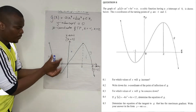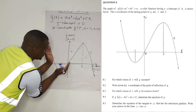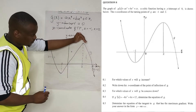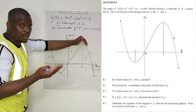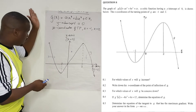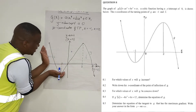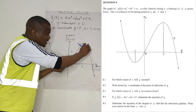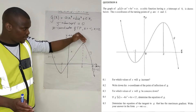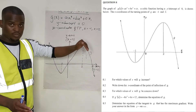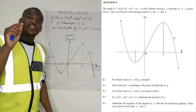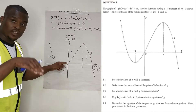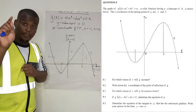So concavity is about whether the graph is looking up or looking down: concave up or concave down. The point of inflection is the point where the graph changes its concavity. So since it was concave up here, somewhere it changes to concave down — that's where your point of inflection is.